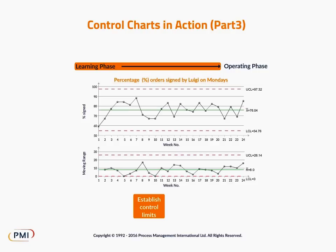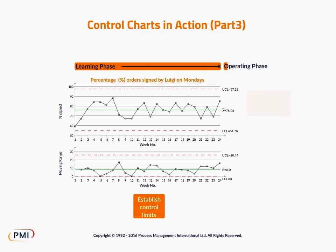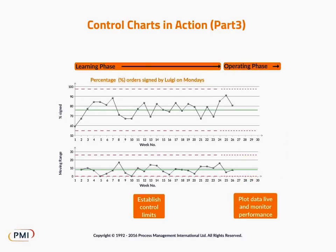In the operating phase, we plot data live on the control chart. Now we can monitor the performance of the process — is it remaining stable over time or is it changing? If assignable causes are present, we should investigate them.